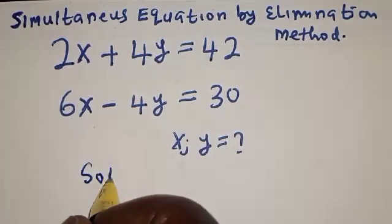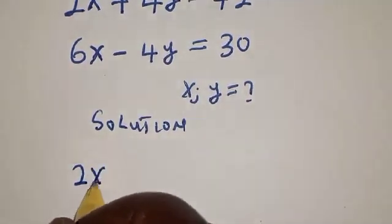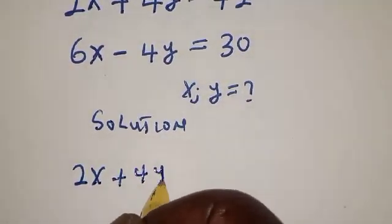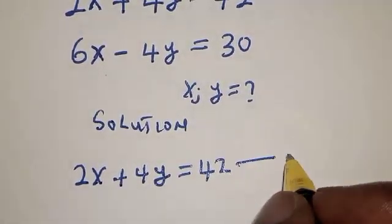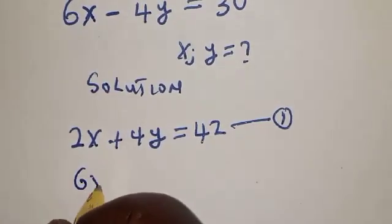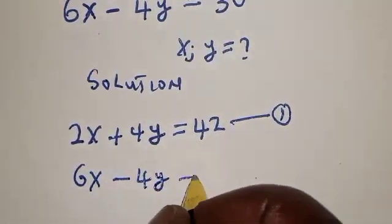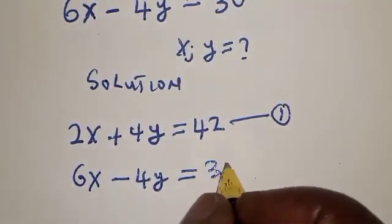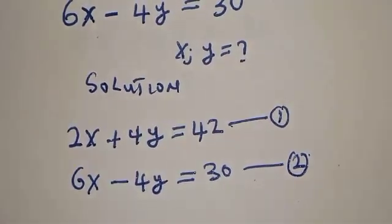Solution. 2x plus 4y equals 42. This is equation 1. 6x minus 4y equals 30. This is equation 2.